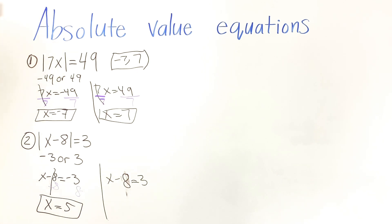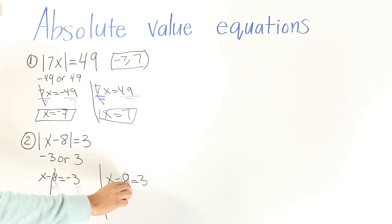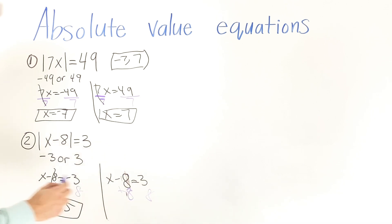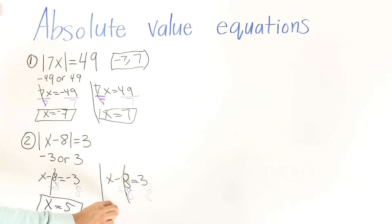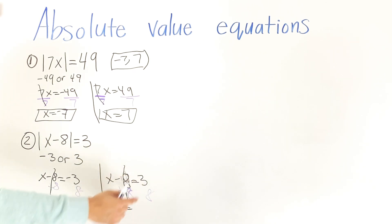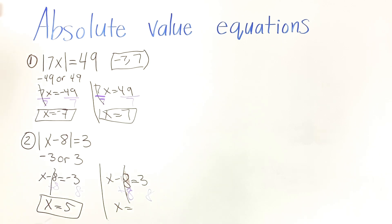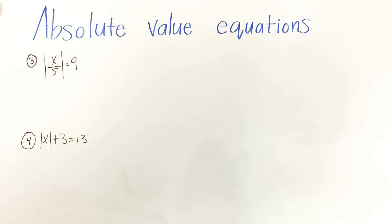On the other side with positive 3, we add 8 to both sides. That cancels, leaving x by itself. We have two of the same sign, so we add: 8 plus 3 gives us 11.